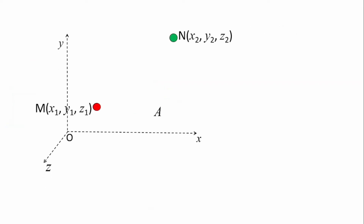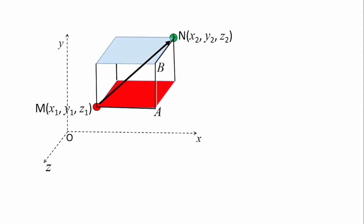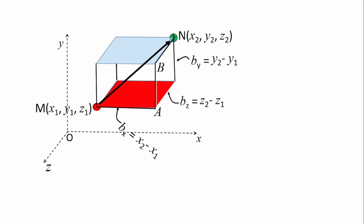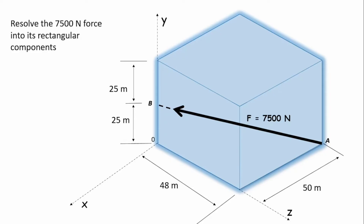However, there are times when the force may not start from the origin of the Cartesian coordinate system. In that case, using knowledge from coordinate geometry — estimating the distance between two points — one can find bx, by, and bz for each axis. With those values, one can compute b, calculate the direction cosines, and if the force is given in magnitude form, easily calculate its components in each direction.